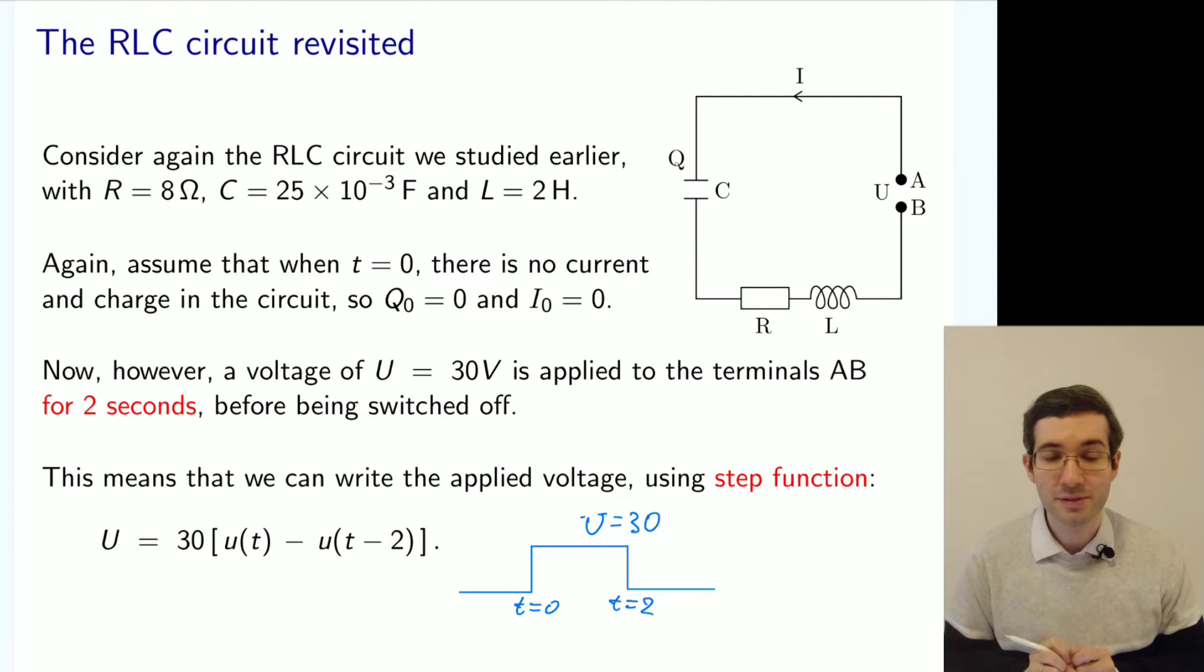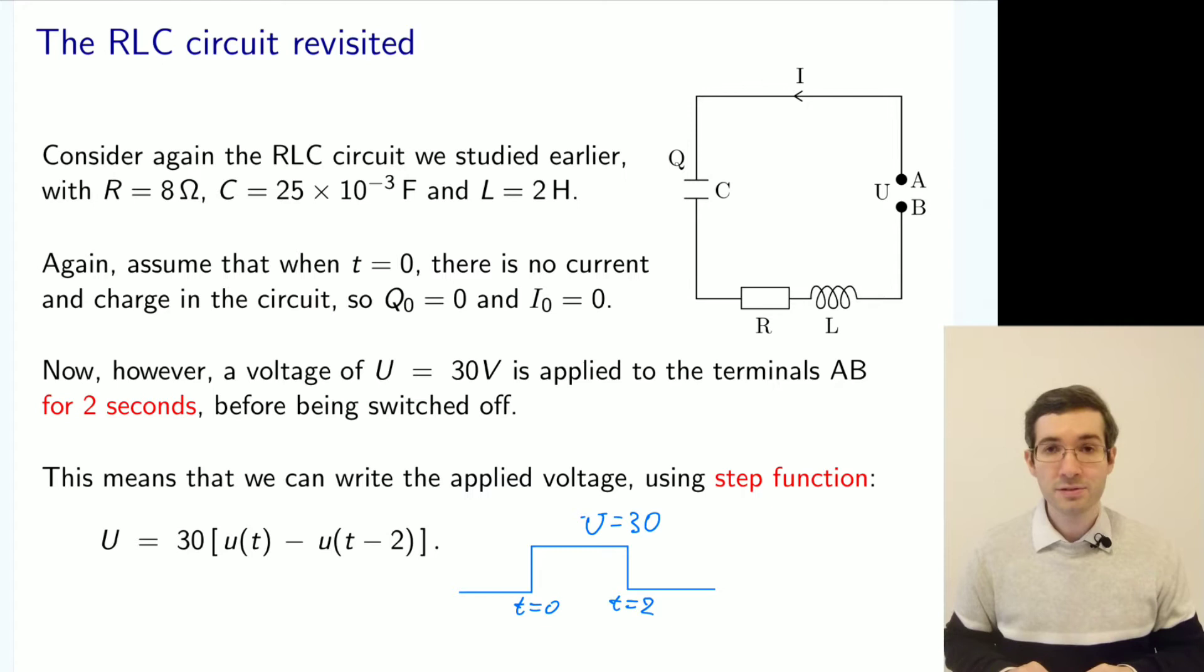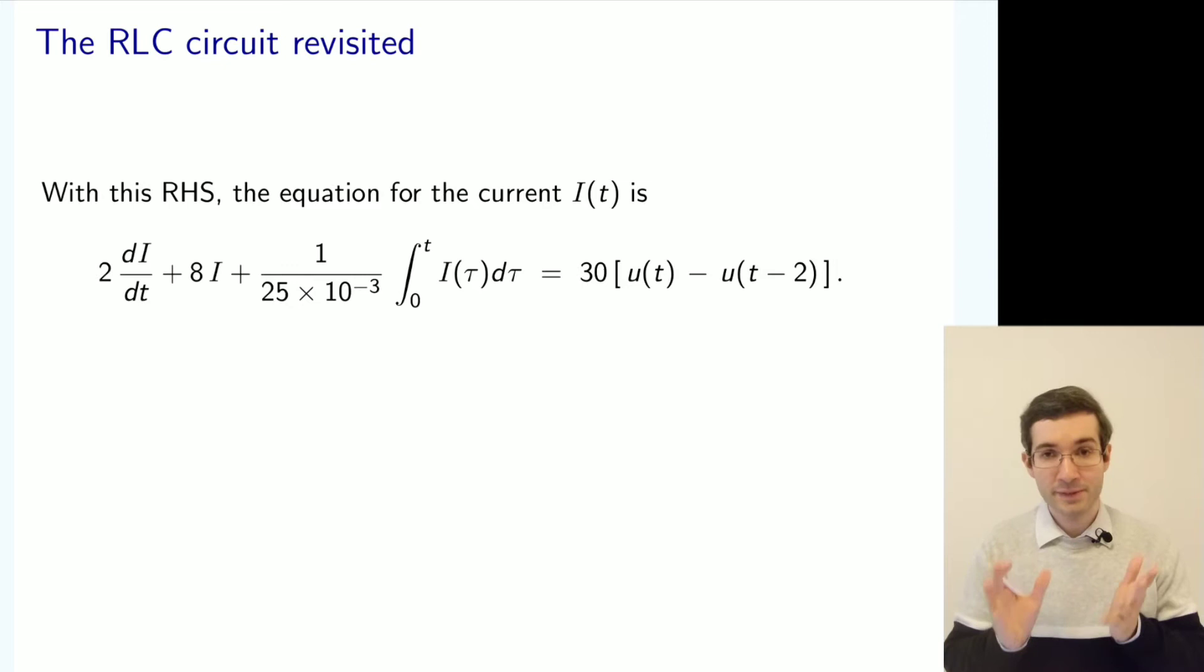So the question is can we model and predict how the current, electric current, behaved in the circuit? So this is an example of a dynamical system, and we know how to model it because we have an equation.